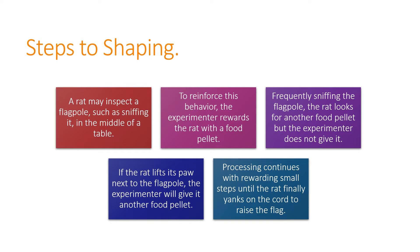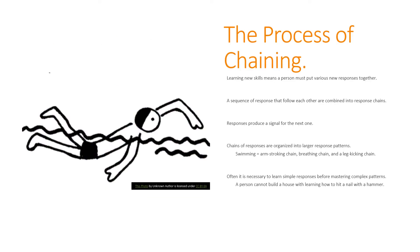The next few times the rat keeps going up to the flagpole and sniffing it looking for the food pellet, but the experimenter does not give it. The rat learns that doesn't produce a pellet, so it tries something else — maybe lifts its paw or touches the flagpole. The experimenter then gives a food pellet for doing something different but closer to the goal. This process continues, rewarding small steps, until finally the rat yanks on the cord to raise the flag. That is shaping.